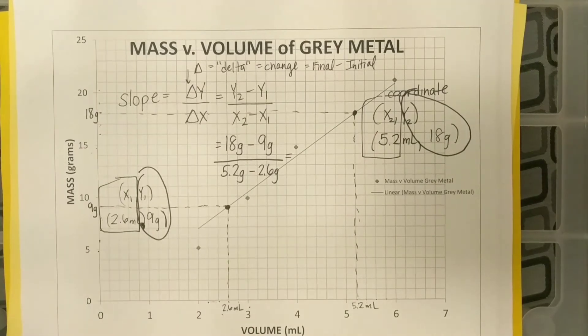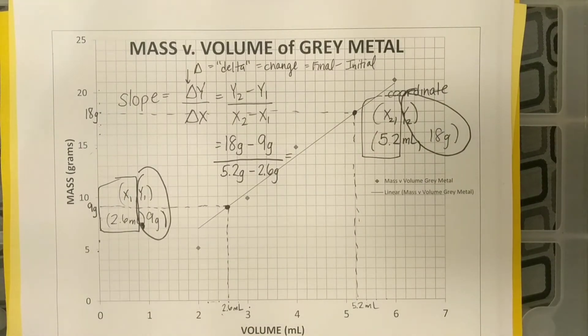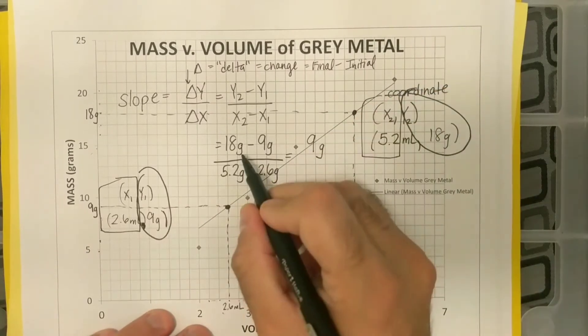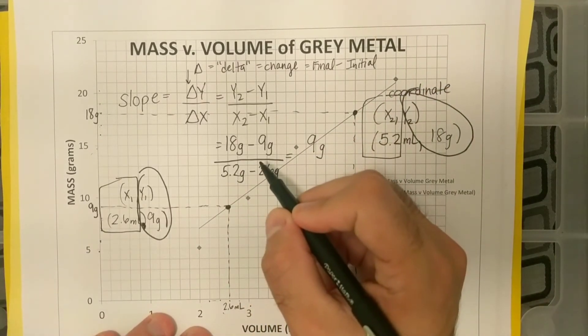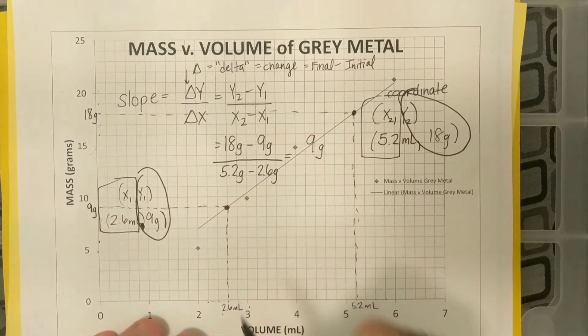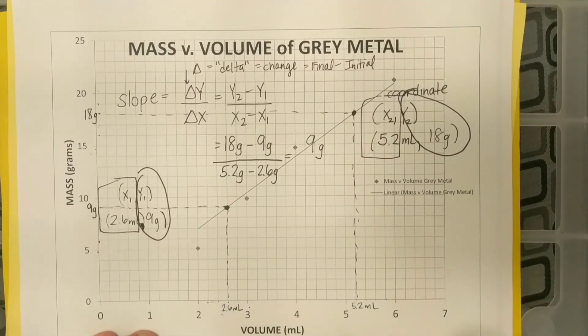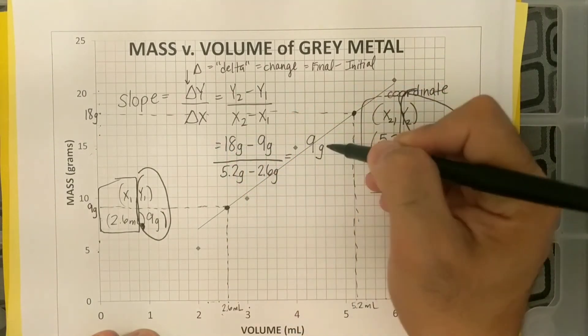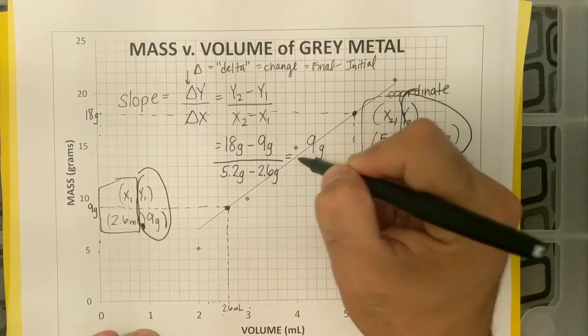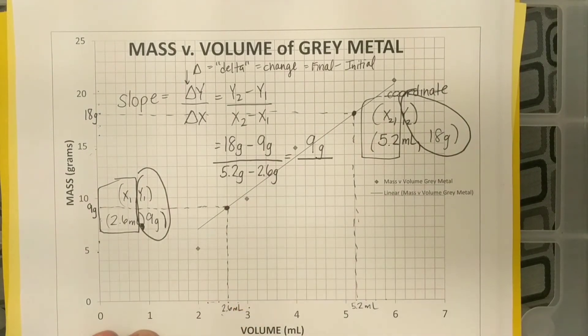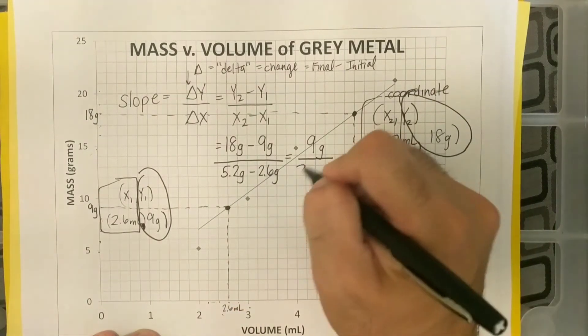I'm going to solve top and bottom. So 18 minus 9, I mean, we could do that in our heads, but I just want to make sure. 18 minus 9 in my head, 9 grams. And notice how I'm keeping the units here. Units are going to be very important for this slope, because I hope you remember what this slope represents of mass versus volume. So my top number is going to be 9 grams, and my bottom number is going to be 5.2 minus 2.6. That's going to equal 2.6.